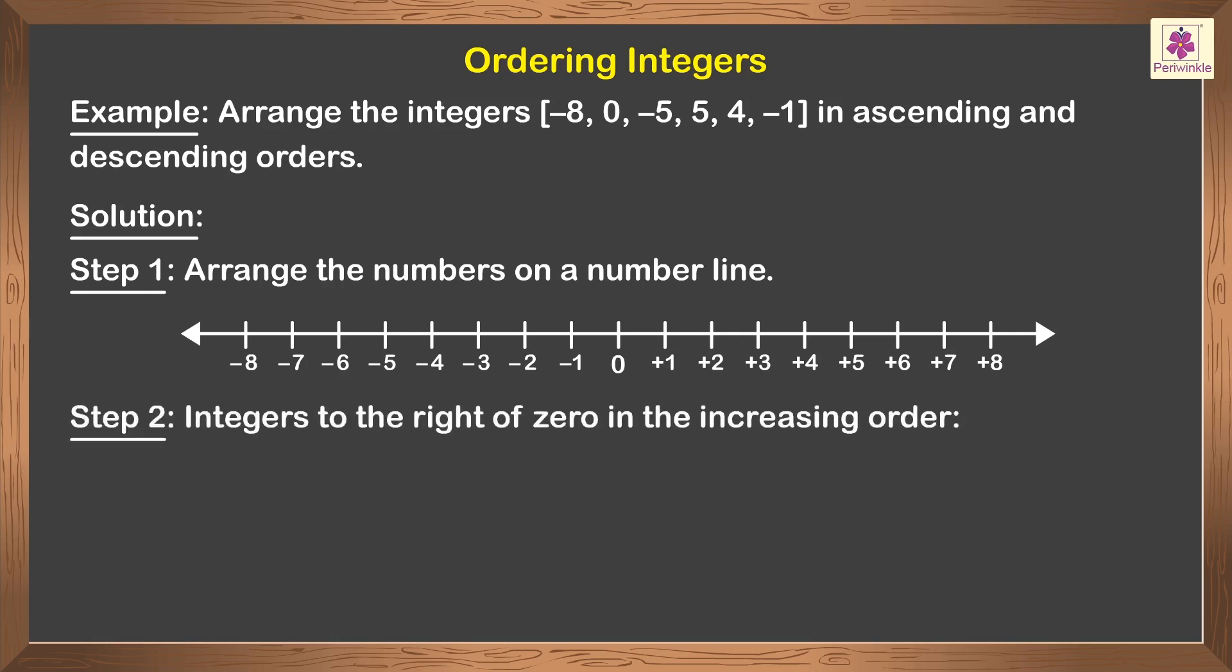Step 2: Write the integers to the right of 0 in the increasing order. So we get the increasing order as 0, 4, and 5.